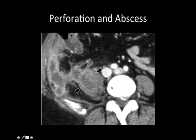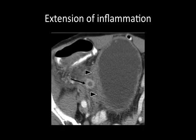This brings up an important point. Here we have an appendix which is fluid-filled, thick, with a fuzzy wall and fat stranding. What else do you see? The bladder. Notice the asymmetric thickening of the bladder wall on the left — don't mistake this for cystitis. In this case, it's much more likely that the adjacent inflammatory changes in the appendix are causing the bladder wall to be thickened.